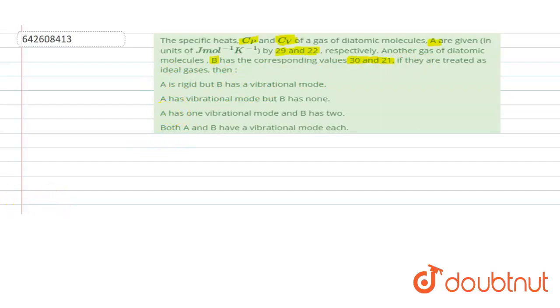Let's understand the concept. Since in the options we can see, we have to check A and B among gas A and B which has the vibrational degree of freedom. As we know, for the diatomic gas, it can have translational degree of freedom and it may have rotational degree of freedom. These are the fixed degree of freedom.